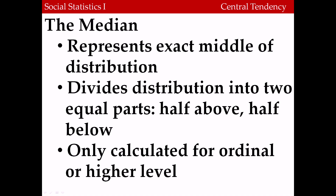Another measure of central tendency is something called the median. The median represents the exact middle of a distribution — it divides the distribution into two equal parts. Half the distribution is above the median, and the other half is below the median. However, because it's a rank statistic, the median should only be calculated for variables measured on an ordinal level of measurement or higher. It's not appropriate for nominal variables, which have essentially no rank ordering.